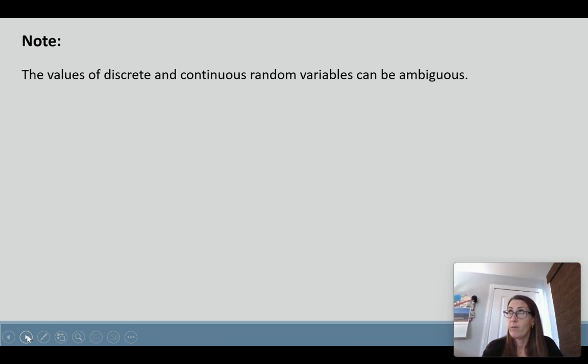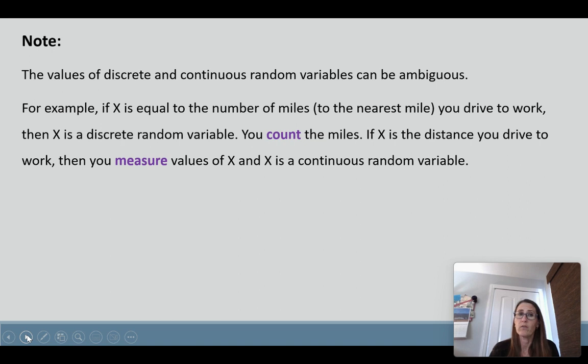Continuous random variables are different than discrete random variables, which we talked about in the last chapter, in chapter 4. Continuous random variables are ones where you can have values in between the countable numbers, so in between 1 and 2, between 2 and 3, so decimals, fractions, as well as the whole numbers. But the values of discrete and continuous random variables can sometimes be ambiguous and confusing.